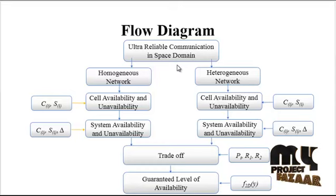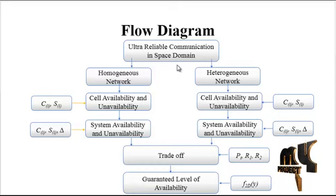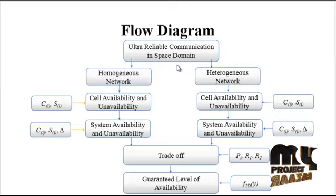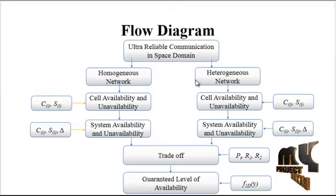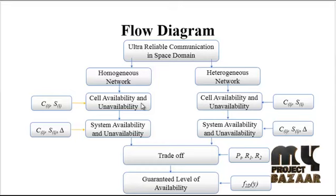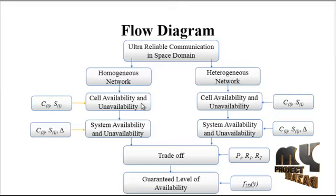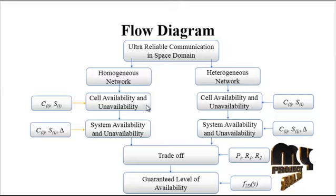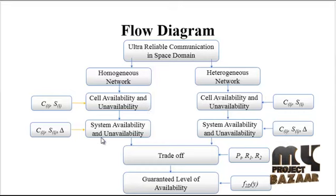First, in the ultra-reliable communication in space domain, nodes are deployed and the Voronoi diagram is plotted as per the nodes. The nodes are then split into two groups: the homogeneous network and the heterogeneous network. In the homogeneous network, cell availability and unavailability are estimated. If the cell is available, the network will transmit; if unavailable, the network will not transmit.